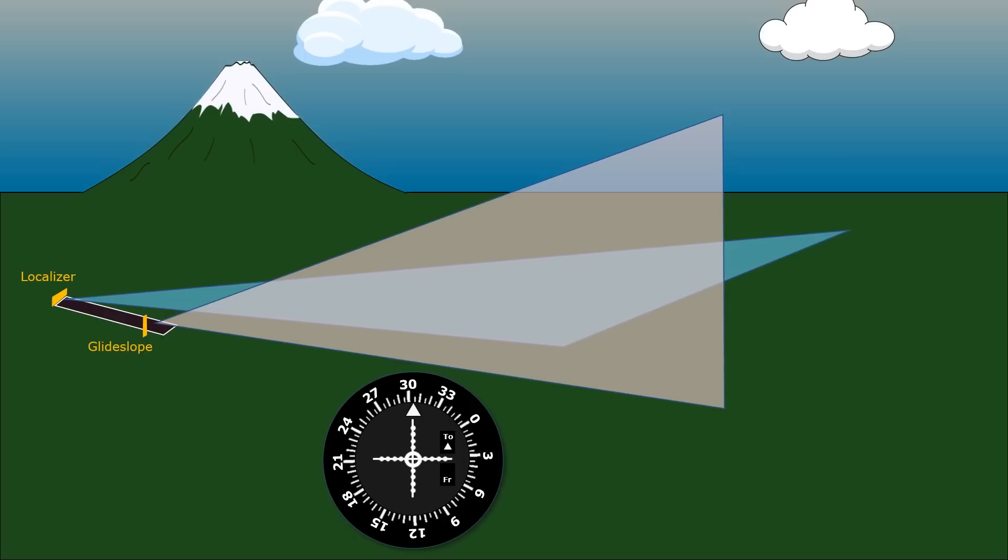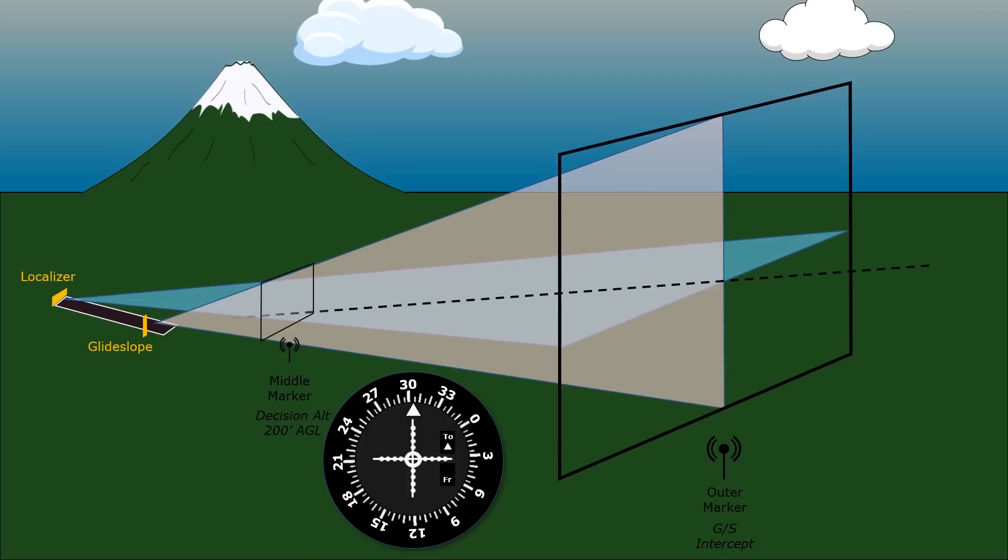ILS approaches will often incorporate a middle marker and an outer marker. The middle marker identifies the decision altitude for the approach, typically 200 feet above the threshold. The outer marker is often at or near the glide slope intercept and serves as the final approach fix if using the non-precision localizer only approach. Aircraft will follow the guidance down to the runway as both signals become narrower and more sensitive. An aircraft at a certain point, say at the outer marker, will have the needles deviate a certain amount as it gets further away from the centerline of both the glide slope and localizer.